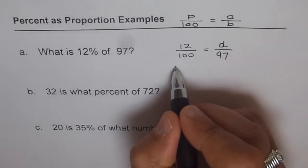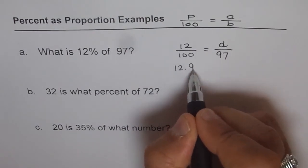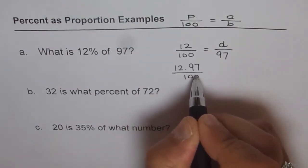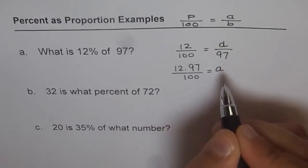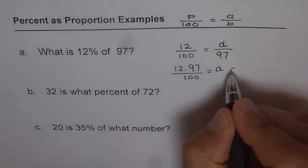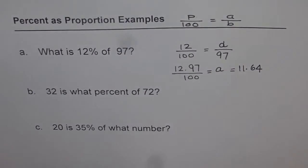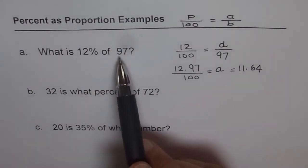So what I will do is multiply 12 by 97, divide by 100 to get the answer for a. Use calculator at this moment. So we say 12 times 97 equals to, and divide by 100. Two decimal places. So we get 11.64. So that is the answer. 11.64. So that is 12% of 97.